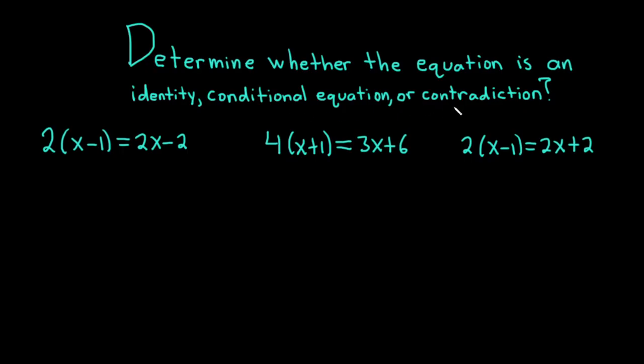And a contradiction is one that is never true. Let's focus on this first equation here, 2 times x minus 1 equals 2x minus 2. Solution.